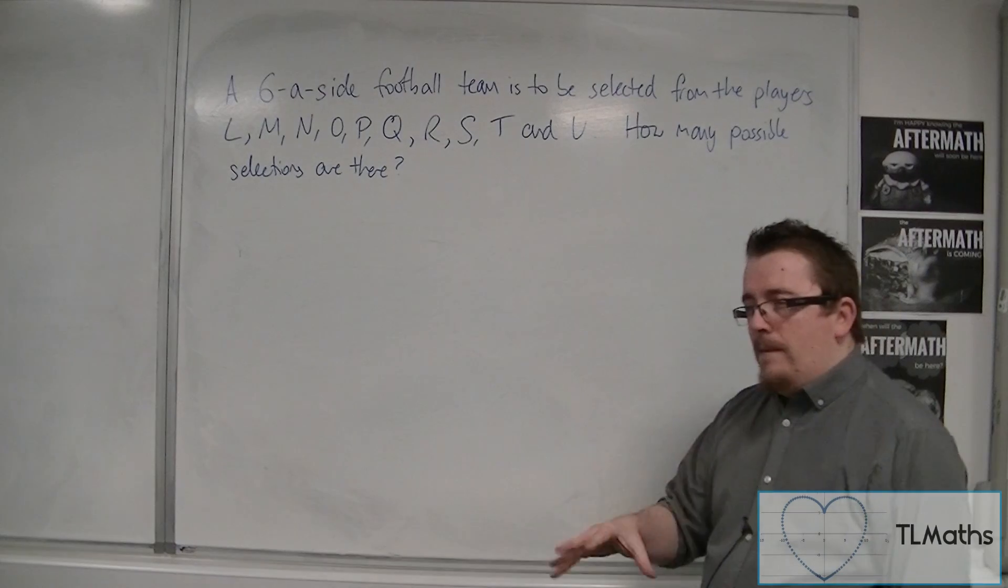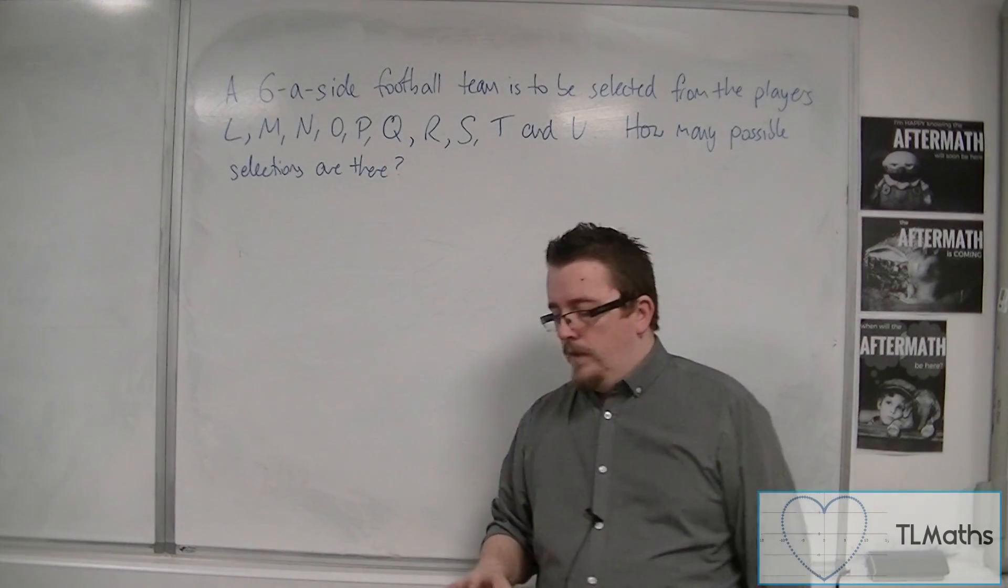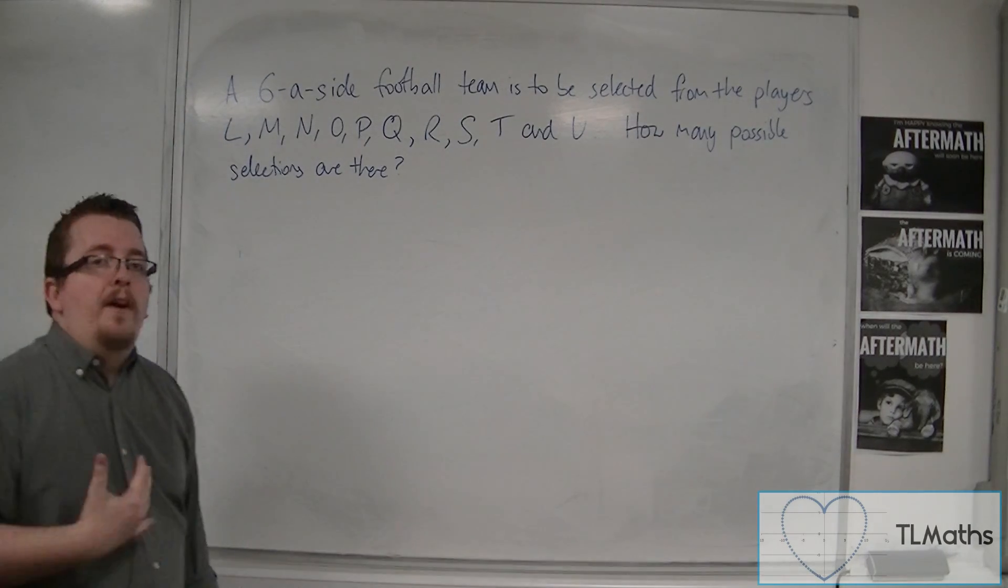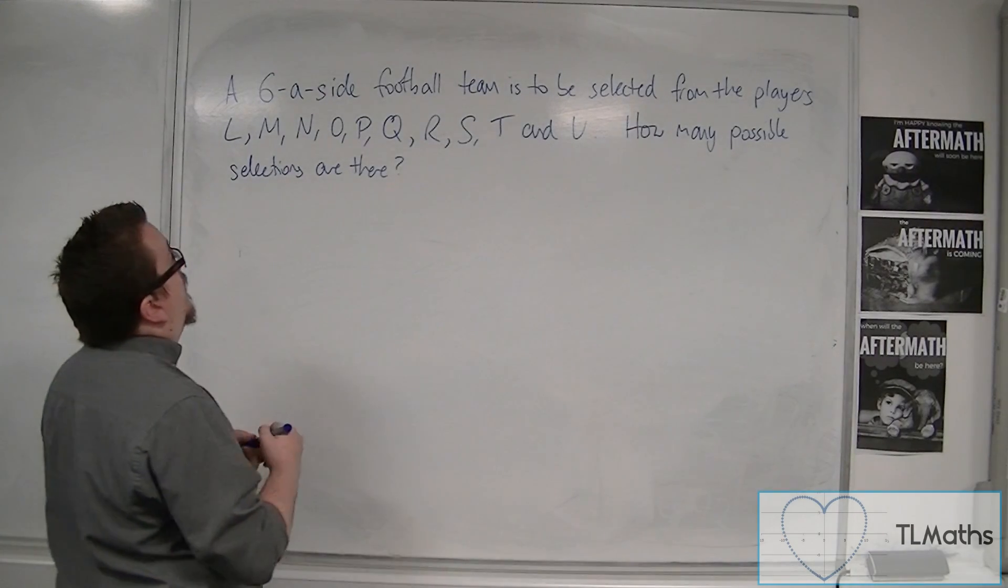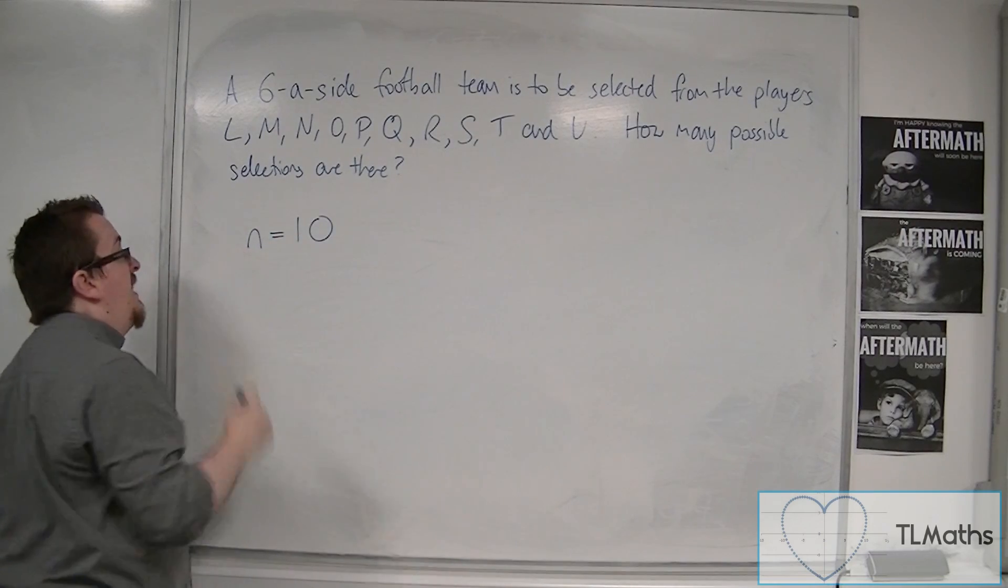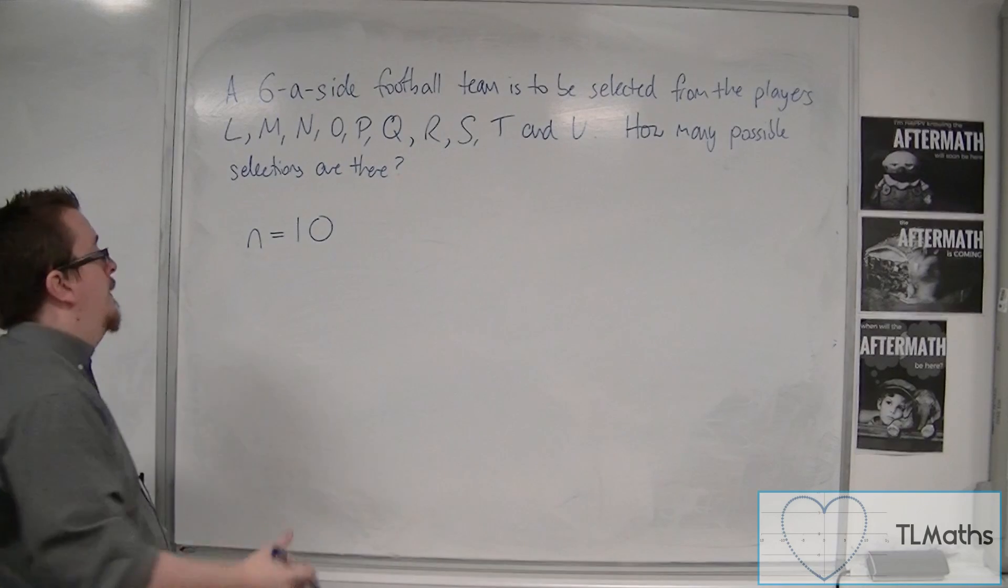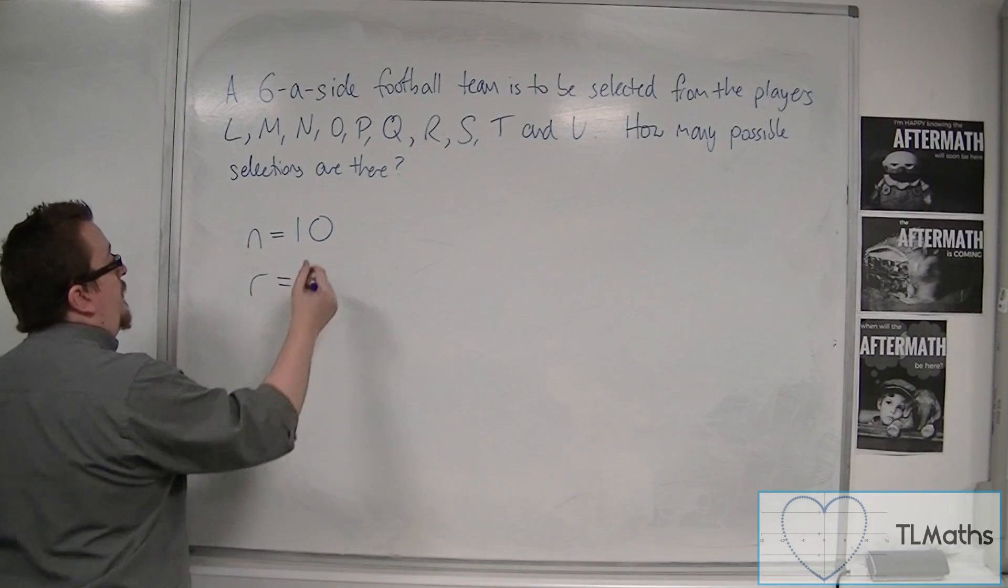So that means that it is a combinations problem. And that's where we use NCR rather than NPR. So for us N is 10 because there are 10 people that I can choose from. And R is the number that I want, and that's six.